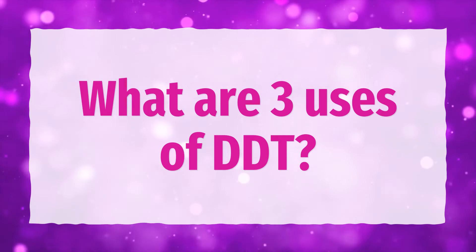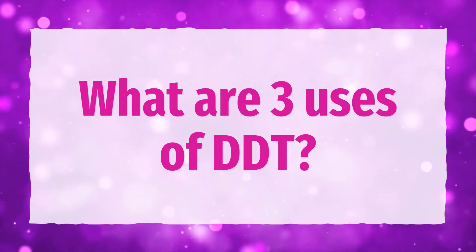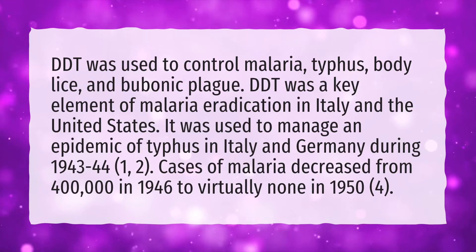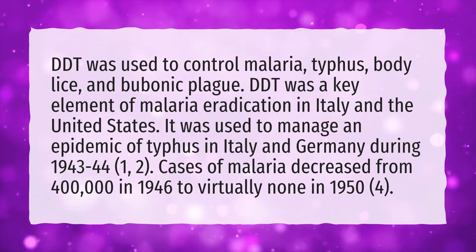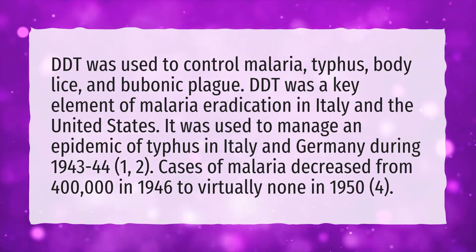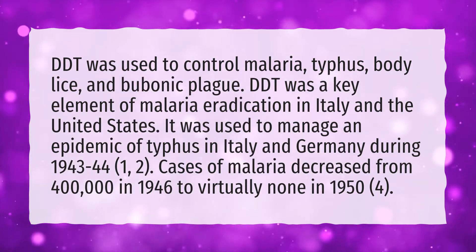What are three uses of DDT? DDT was used to control malaria, typhus, body lice, and bubonic plague.